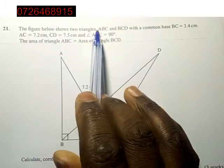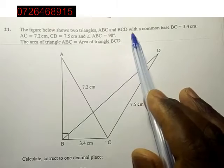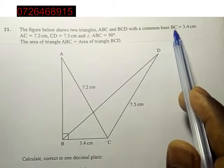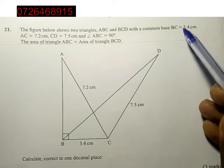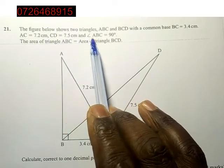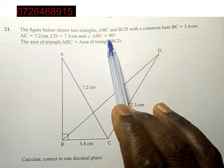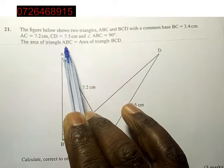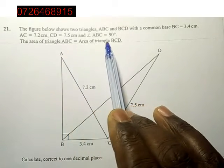The figure below shows two triangles ABC and BCD with a common base BC. BC is 3.4 cm, AC is 7.2 cm, CD is 7.5 cm, and angle ABC is 90 degrees. The area of triangle ABC is equal to the area of triangle BCD. That is the most important thing here.